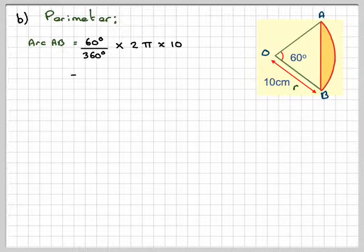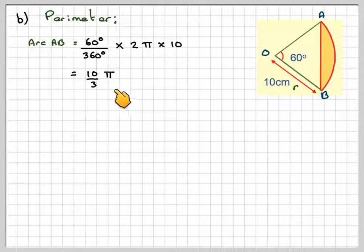Again, using the fraction button on your calculator, that will give you 10 over 3 pi. Leave it like that for the moment. Now, we need to find this length here.